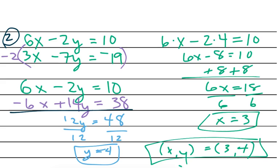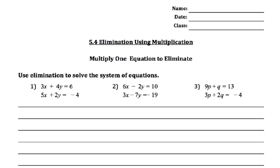Okay, let's check it. 6 times 3 is 18, minus 8 is 10, first one's good. 3 times 3 is 9, minus 28 is negative 19. We're good.